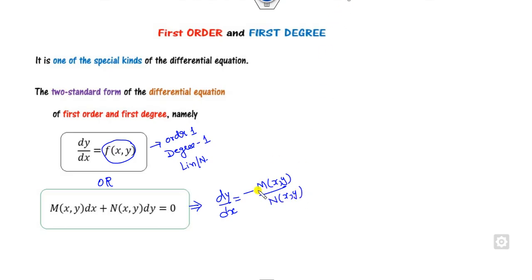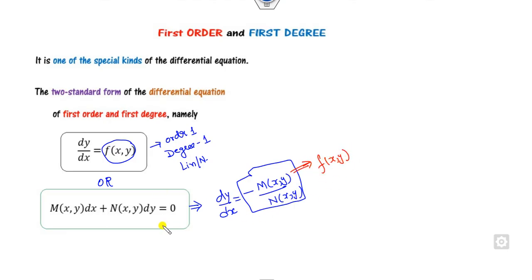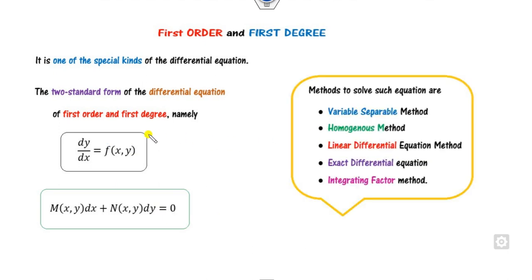For the sake of simplicity, I can consider this part as my f(x, y). So this is a first order, first degree equation. There are several methods to solve it, and in this lecture we will see the first method called variable separable. After this, we will see the homogeneous method in the next lecture.